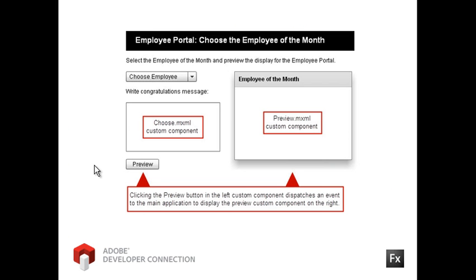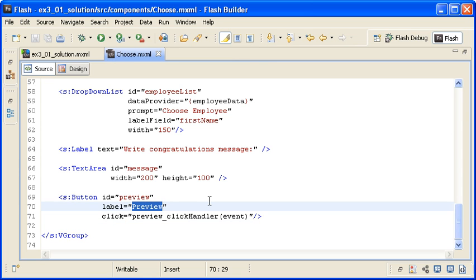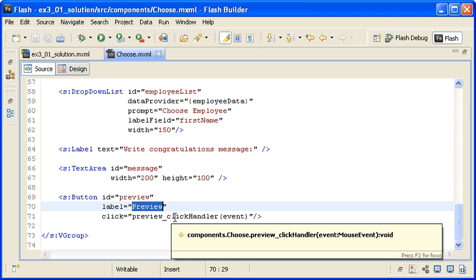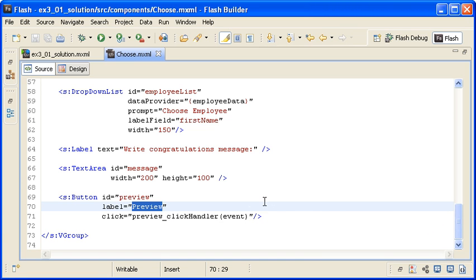This is the application I will demonstrate in this video. Initially, it only displays the MXML custom component named Choose on the left. The idea is that an administrator of the Employee Portal would access this page to select the Employee of the Month and write a congratulations message. When the administrator clicks on the Preview button in the Choose component, the application turns on the second custom component named Preview. The Preview button is inside of the Choose MXML custom component.